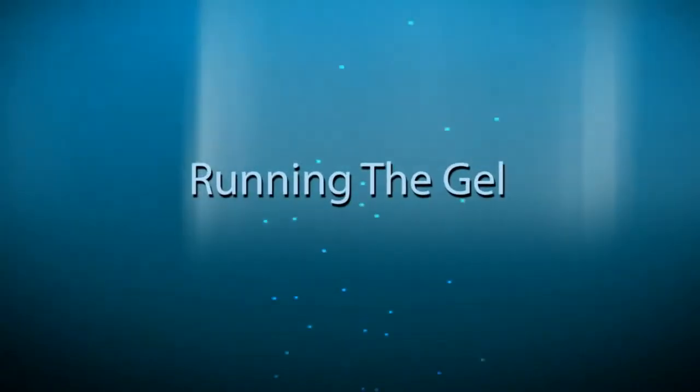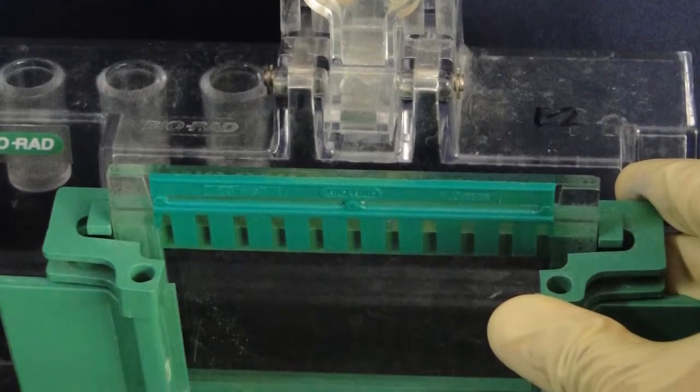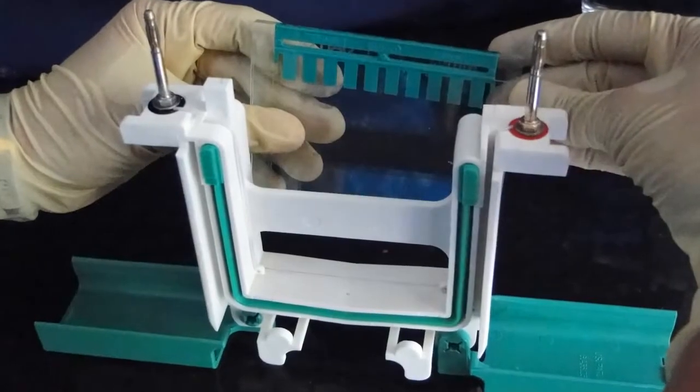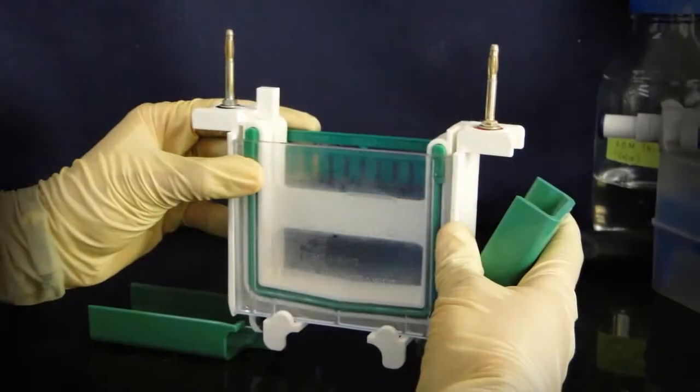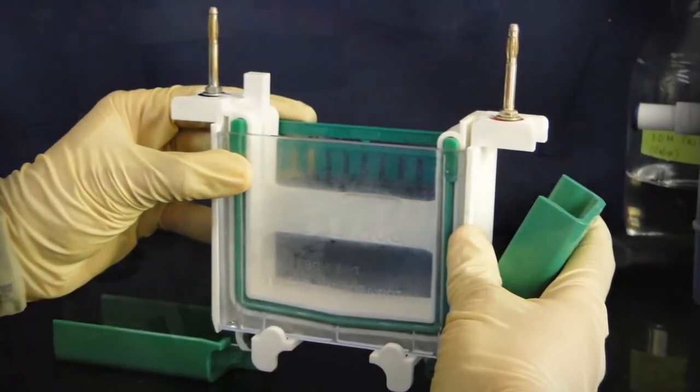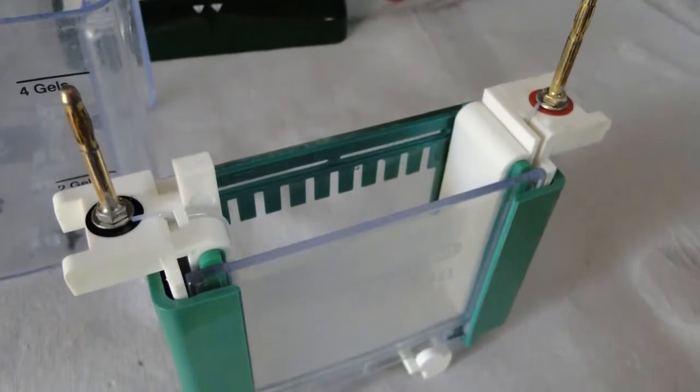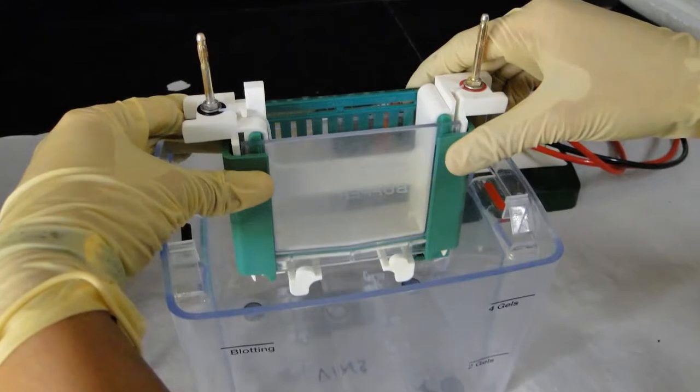For running the gel, assemble the apparatus first. Take out the gels from the casting frame and clamp them in the gel apparatus. Make sure that the short plate always faces inside and if you have only one gel to run, use the dummy plate that is available to balance. Secure the plates, place them in the cassette and lock it. Now place the cassette in the tank.